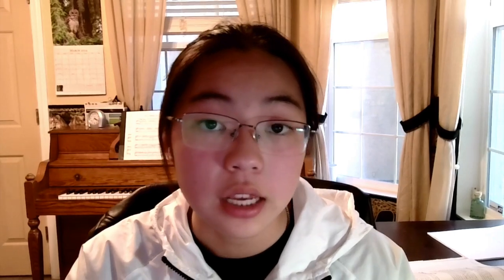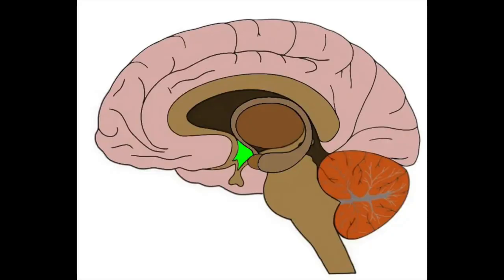Then you have the amygdala, which ties back to the limbic system being involved in controlling emotions, because the amygdala is involved in the expression of anger and frustration. Finally, you have the hypothalamus. I personally think of it as like a super granny, because it does so many things that basically keep your body in check. It controls temperature, water balance, hunger, sex drive, activation of the sympathetic nervous system, as well as the endocrine system.